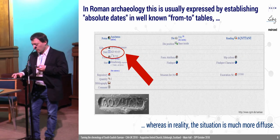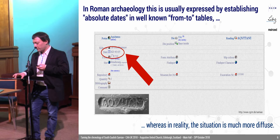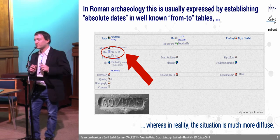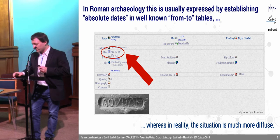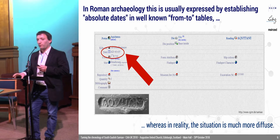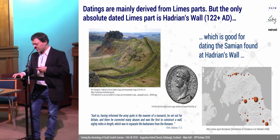How is it done? Normally in Roman archaeology, this is done by establishing some kind of absolute dates from two tables — but you all know that in reality the situation is much more complex than this.